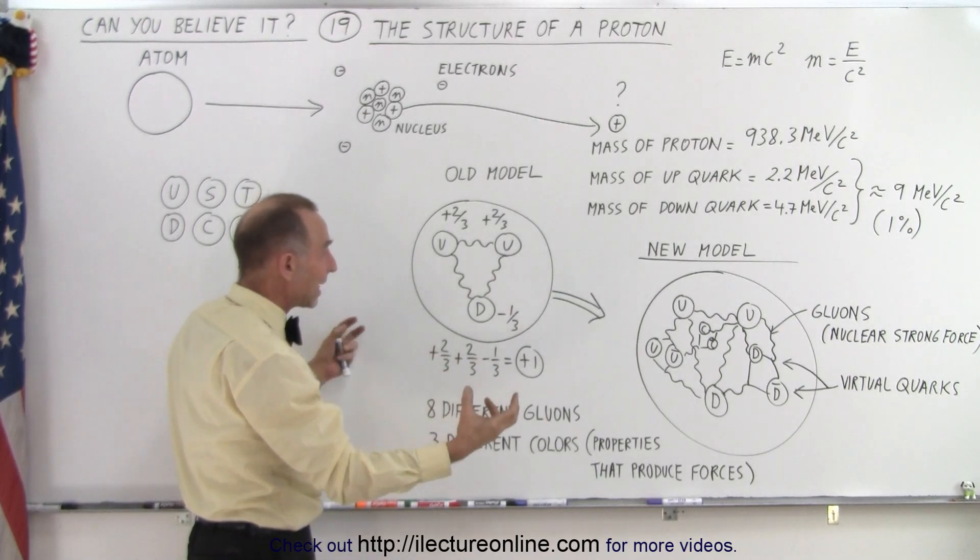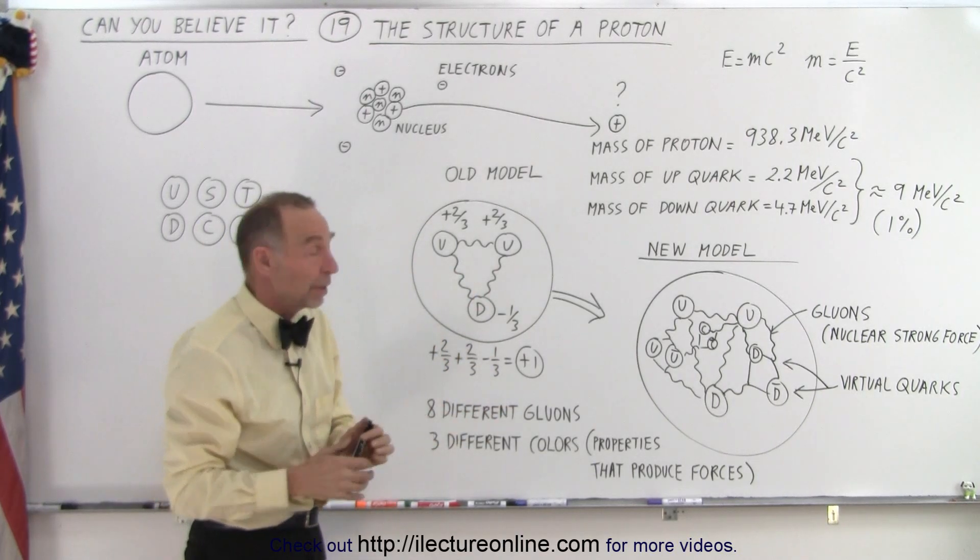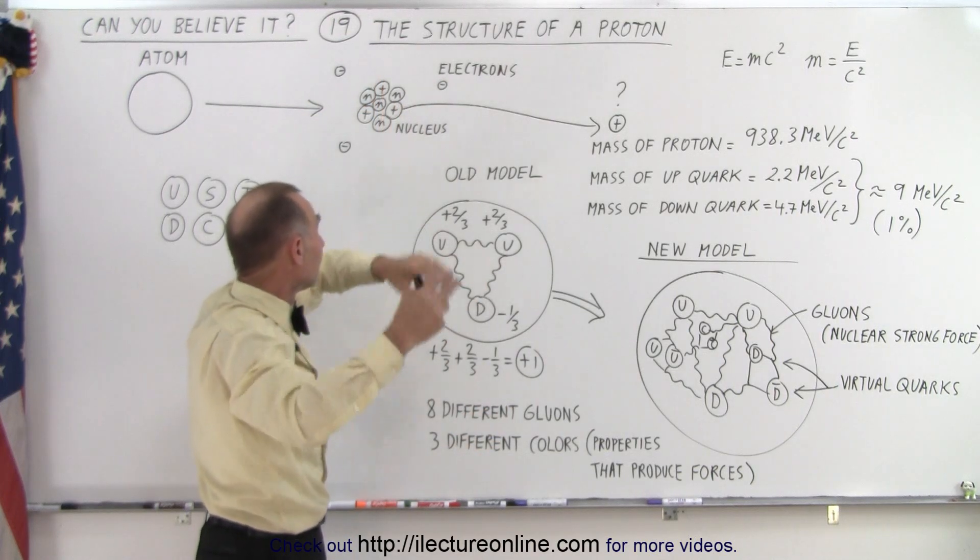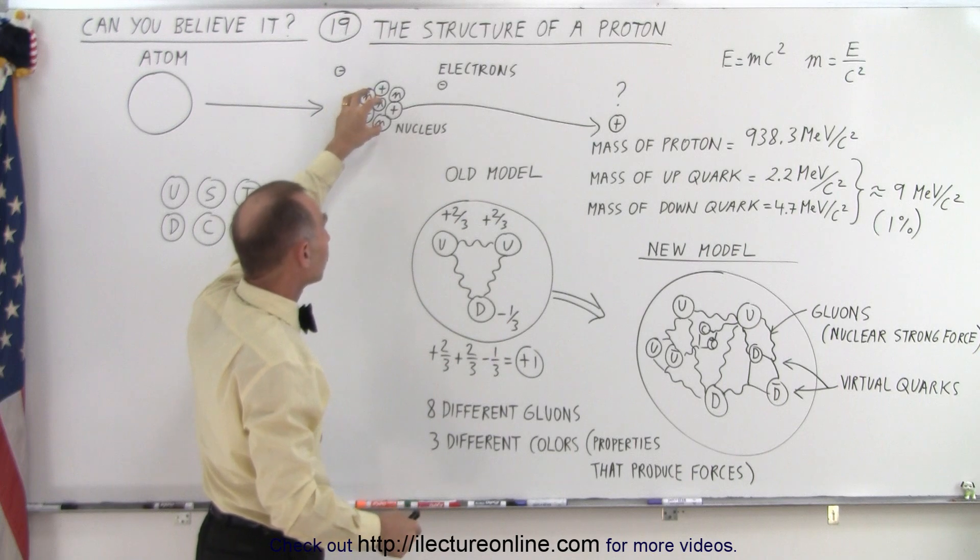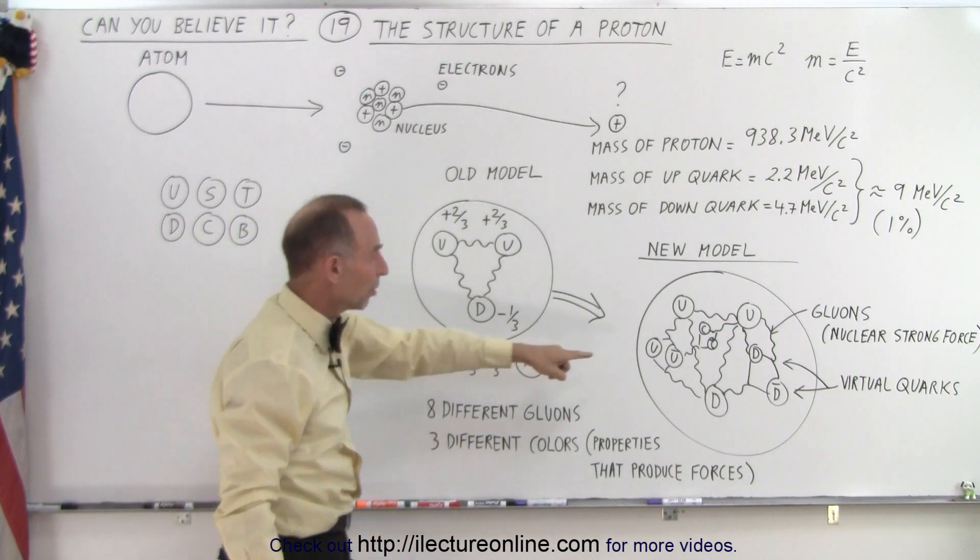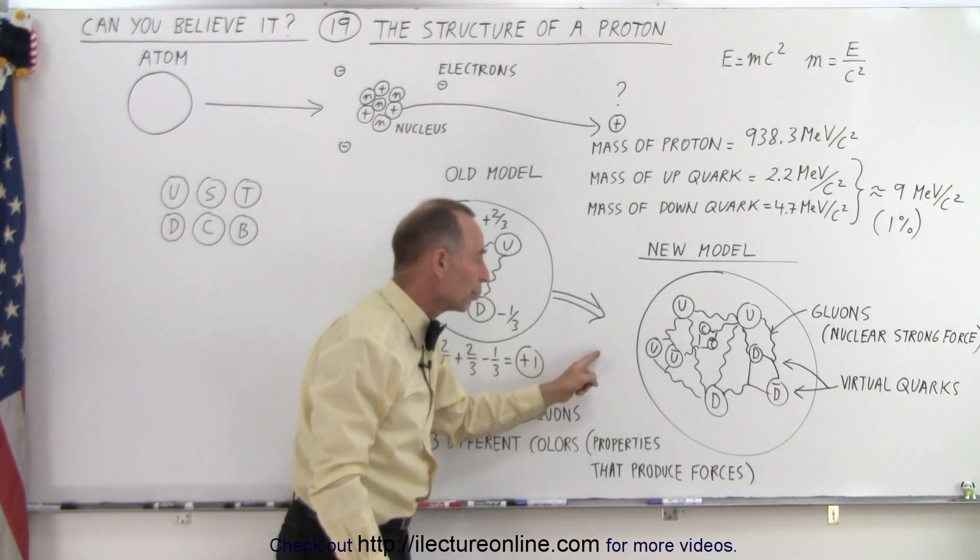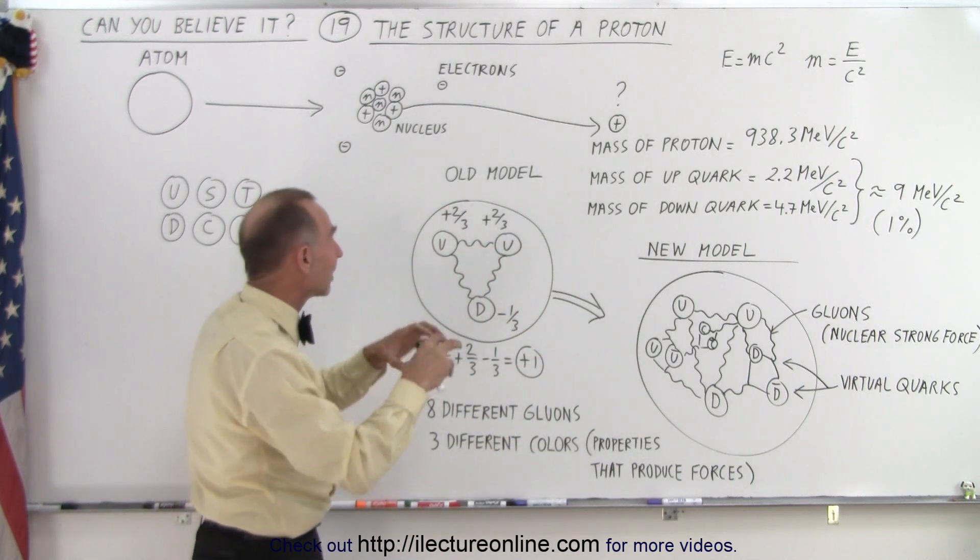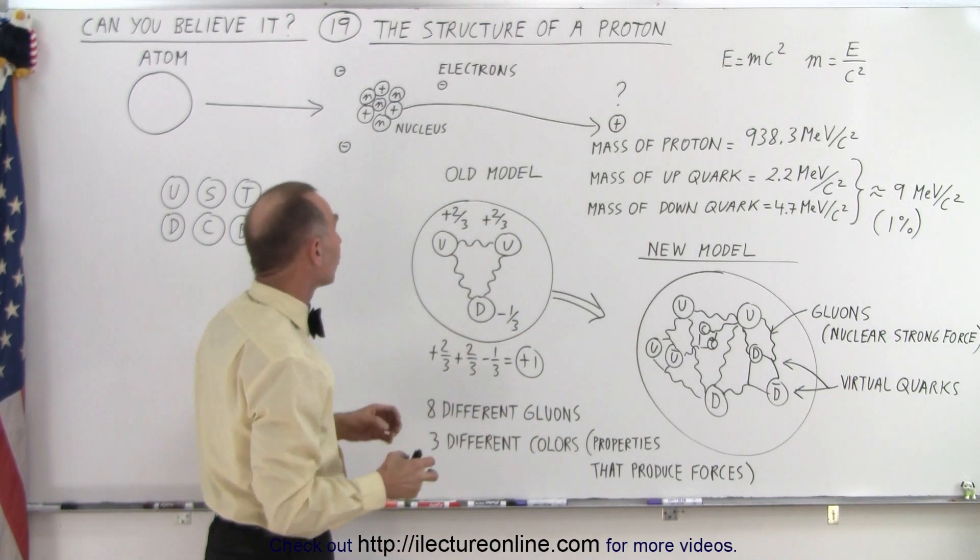These protons should just shoot out like bullets out of a gun because they repel each other with this enormous force. But it's the gluon interaction between proton and proton and proton and neutron that keeps them locked together in a tight bunch.